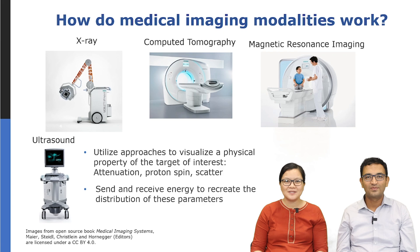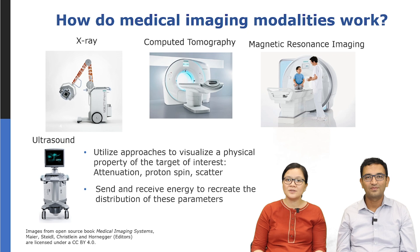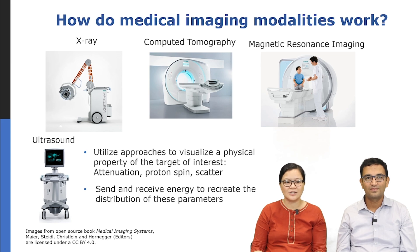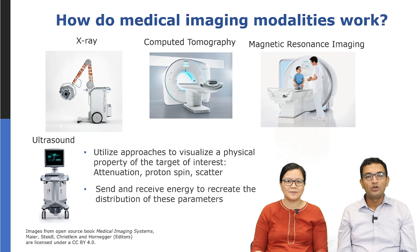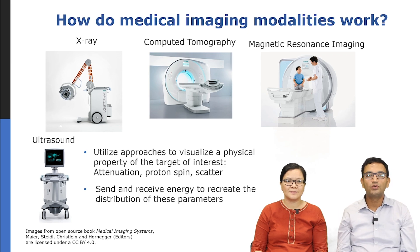How do medical imaging modalities work? We can utilize approaches to visualize physical properties of the target of interest. For instance, attenuation, such as in x-ray imaging and computed tomography. We can also look into proton spins, like in magnetic resonance imaging, as well as scatter — for instance, ultrasound scatter in tissue. We can send and receive energy to create a distribution of these parameters. Here are some machines used for imaging different modalities: x-rays, computed tomography, magnetic resonance imaging, and ultrasound.